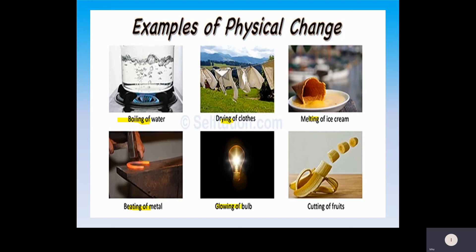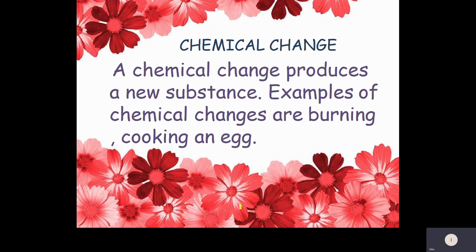Now we need to understand chemical changes. How can we differentiate chemical change from physical change? A chemical change produces a new substance. Recall that in physical change there is no formation of new substance, but in the case of chemical changes, there is always a formation of new substance.